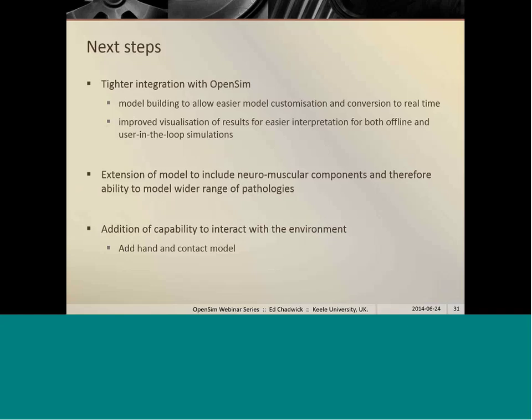So our next steps. We'd like to integrate more tightly with OpenSim both at the front end and at the post processing end. In terms of model building, we'd like to allow easier modification and customization of the models and quicker and easier one-touch conversion to real time format. And we'd like to achieve improved visualization of the results as well. So as I said, we've been working on various ways of visualizing results by driving a virtual reality environment or by the force vector plug-in that I've showed you as well. That still needs a little bit of work in terms of debugging at the moment. We'd like to extend the model to include neuromuscular components so that we can model a wider range of pathologies. And we'd like to add the capability to interact with the environment. So by adding a hand and contact model so that we can use the device to test and try out interactions such as picking up objects and pushing buttons and so on.